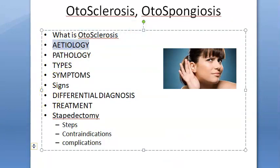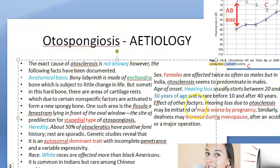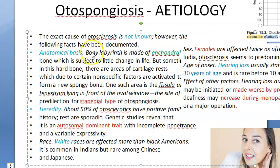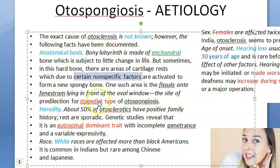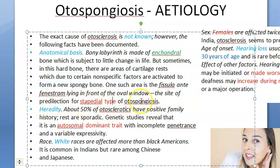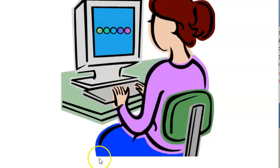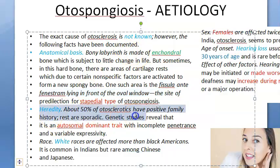Now let's look at etiology — why does this bone become spongy? The exact cause is unknown. One site of predilection for the stapedial type of otospongiosis is the fissula ante fenestram, lying in front of the oval window. This is the anatomical basis for why that particular area is more commonly affected.